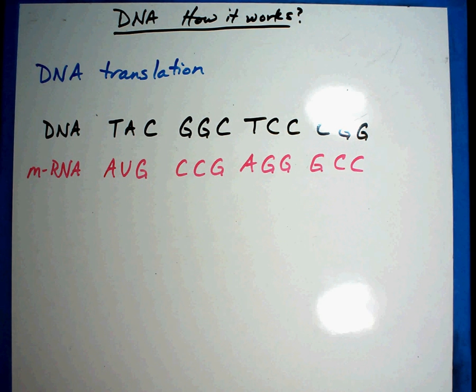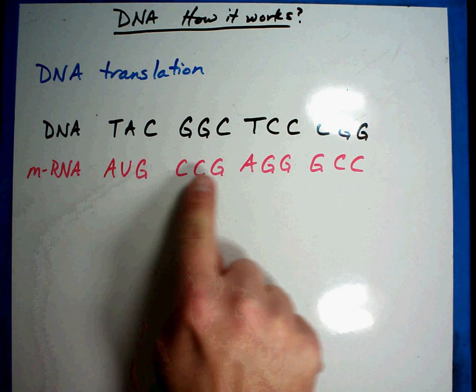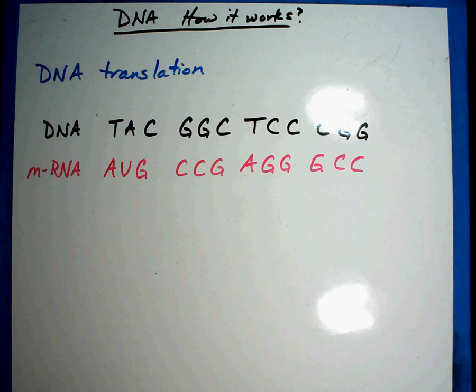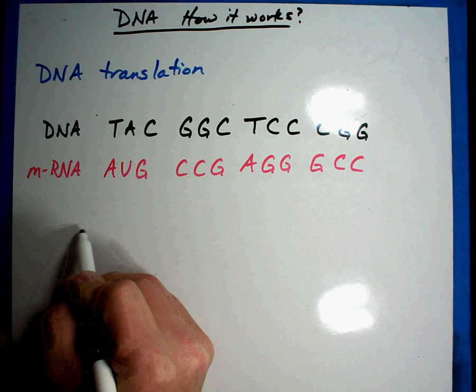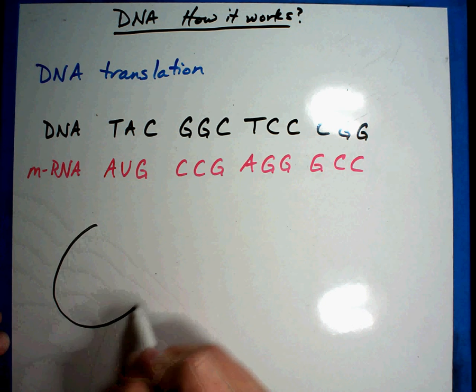So here's the example of our messenger RNA and in the last lesson you actually got to practice it yourself. Now we have the secret message. Now it's going to be sent out. And where it's going to be sent is to a place in the cell called the ribosome.